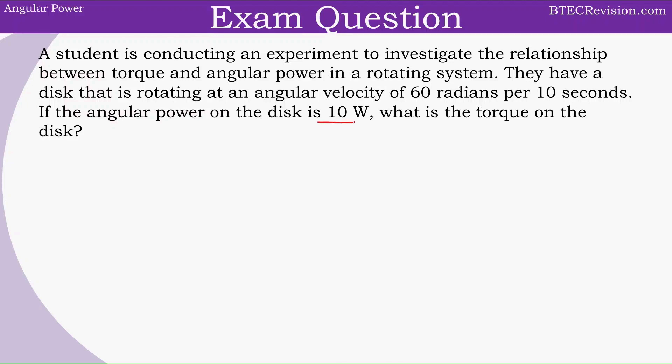We can start by writing down what we have and converting the units that are necessary. Power equals 10 watts. And the angular velocity is 60 radians per 10 seconds, so that's the value of 6 radians per second, which is the correct unit. Now we can write down the equation: power equals torque times angular velocity.